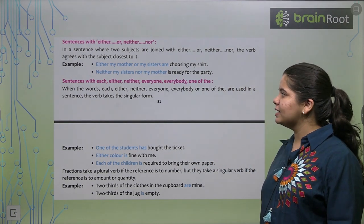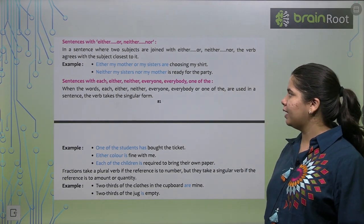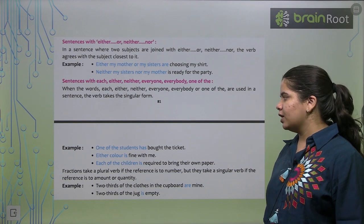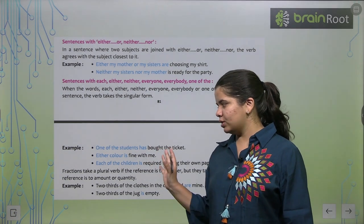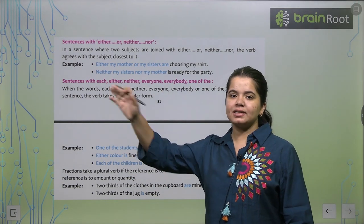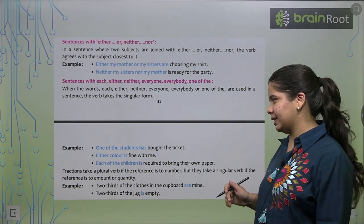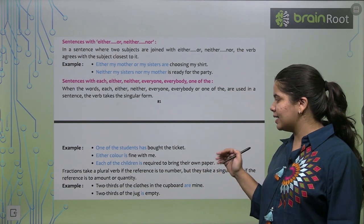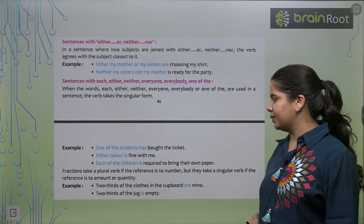Next, sentences with each, either, neither, everyone, everybody, one of the. One of the students has bought, either colour is fine. Toh, in saare words ke saath bhi hume singular verb hi use karte hai. Each of the children is required.